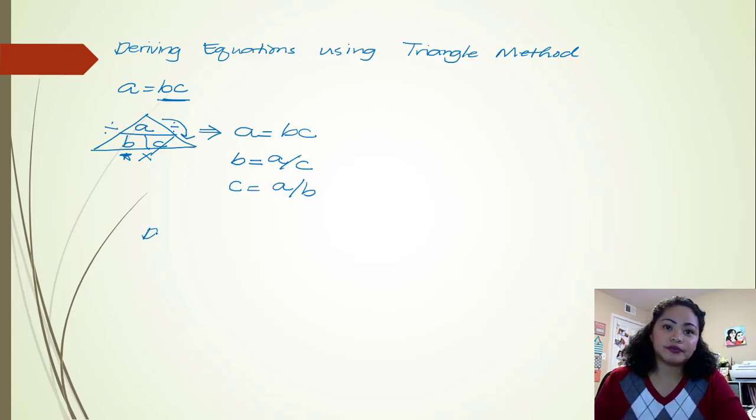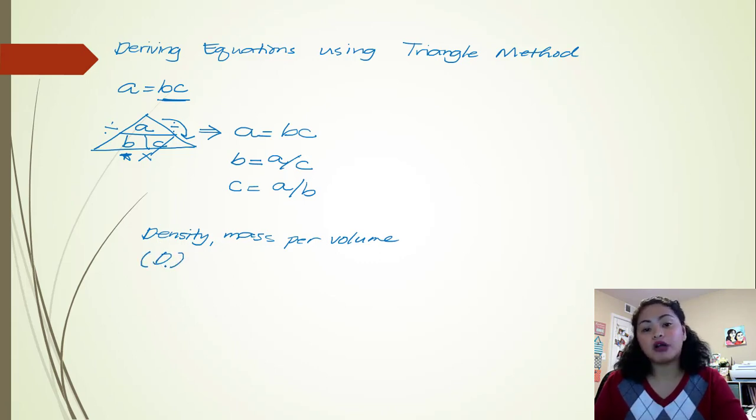Density. What is the definition of density? It is the mass of an object per volume, per unit volume. So from here, let's first assign the letters to denote these variables. So density, we can have capital D. We use capital because the small d or the lowercase d is already used for distance or displacement. So we're just going to use an uppercase D. And then mass, we're just going to use M. And then volume is V.